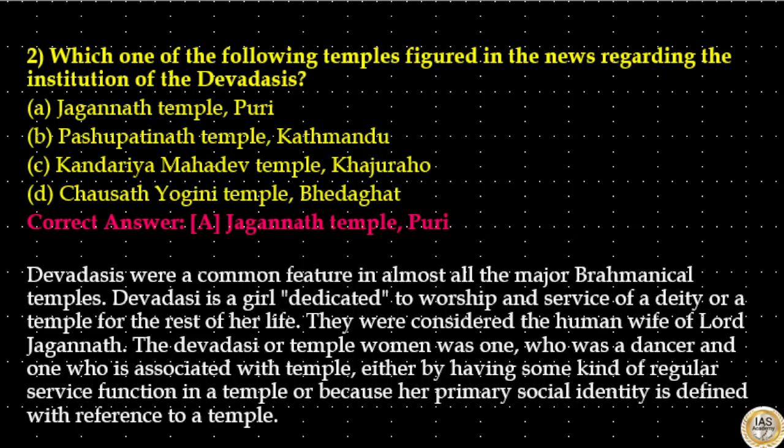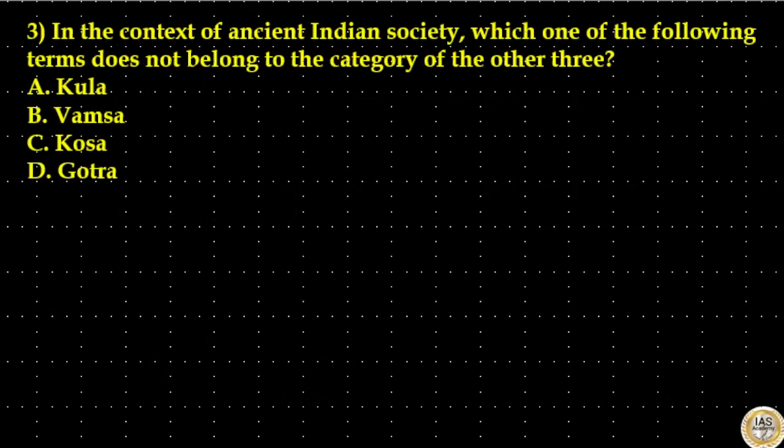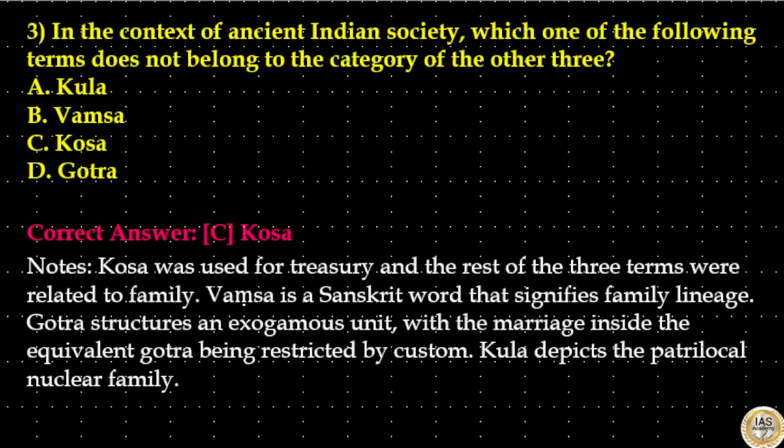In the context of ancient Indian society, which one of the following terms does not belong to the category of the other three? The options are Kula, Vamsa, Kosa and Gotra. The answer is option C: Kosa. Kosa was used for treasury, and the rest of the three terms were related to family.